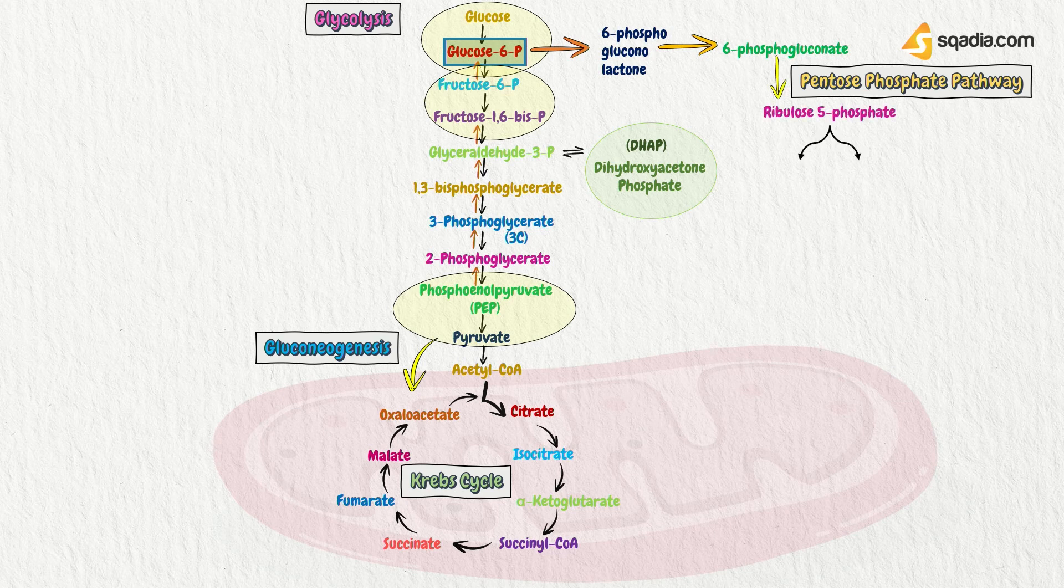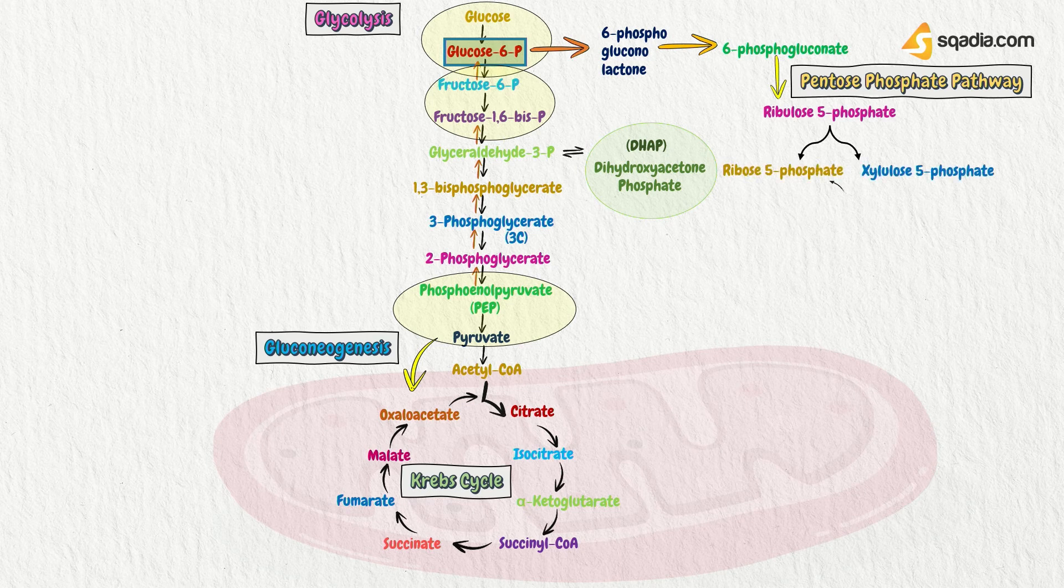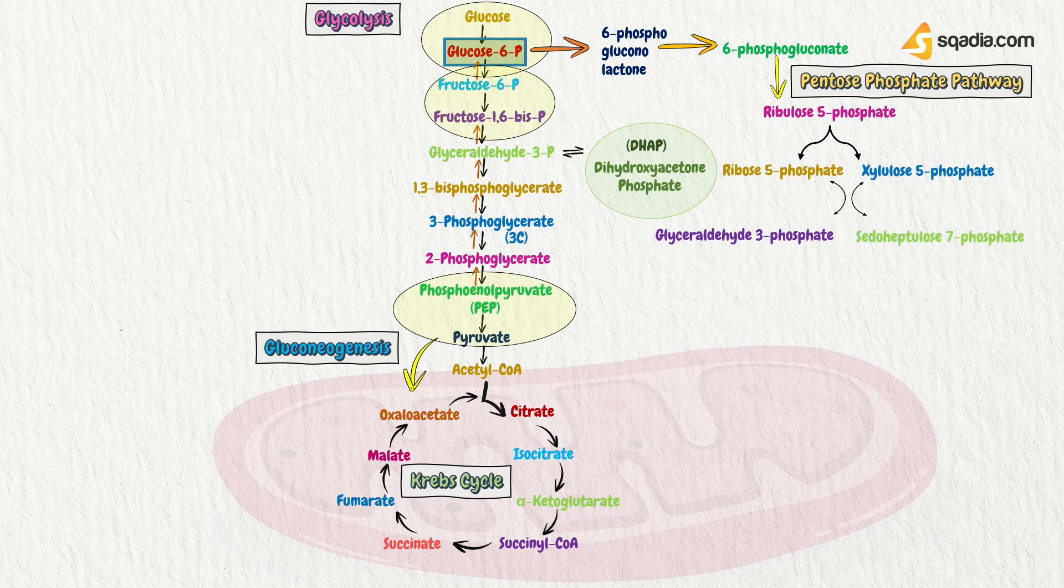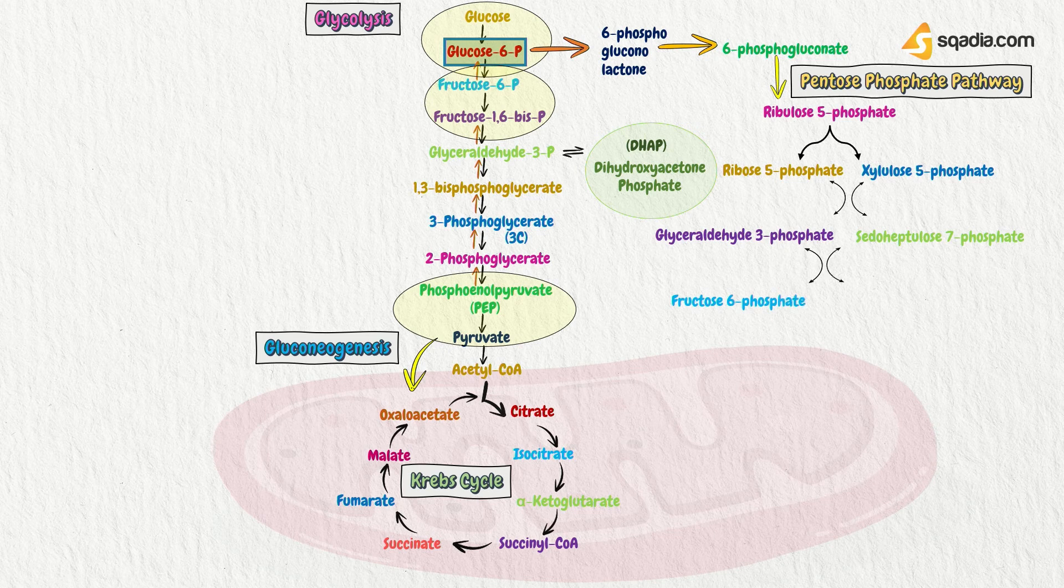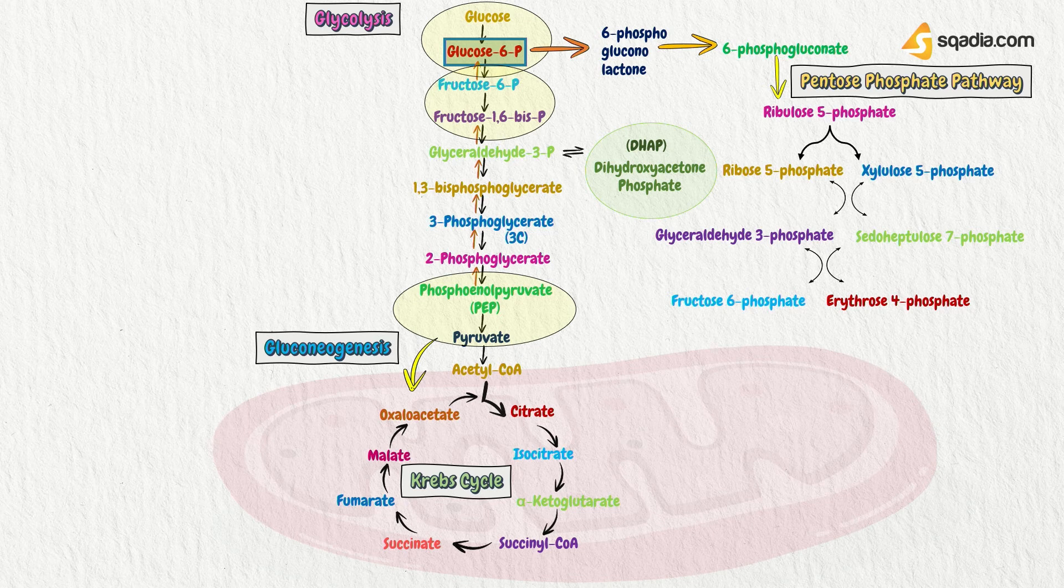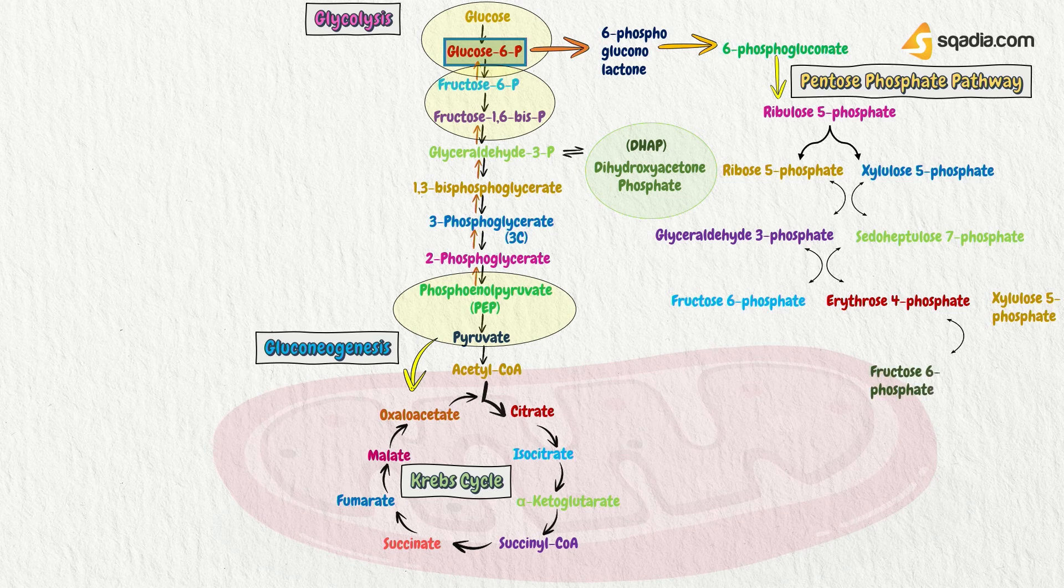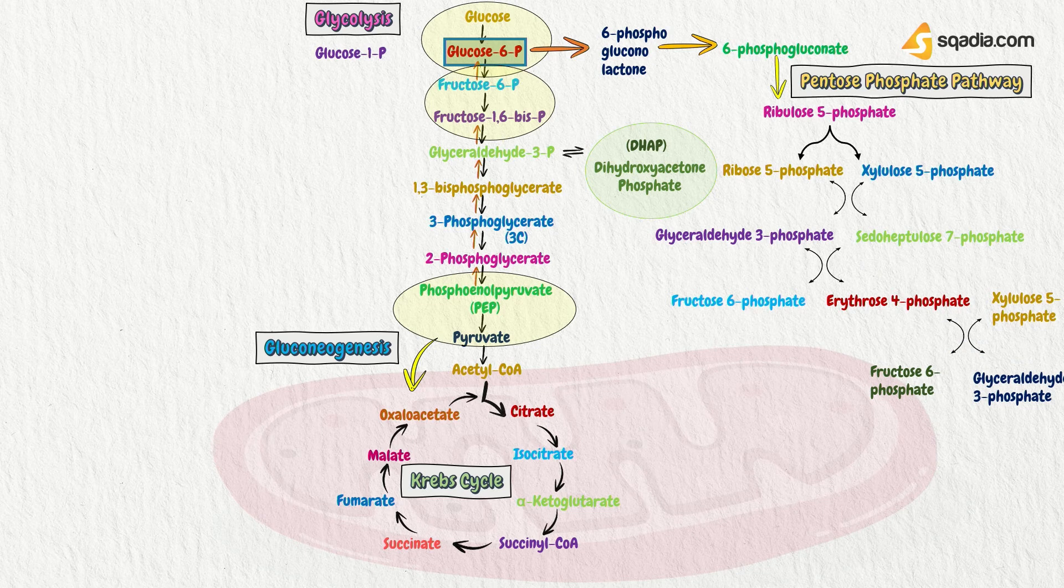From that, series of reactions take place from ribulose 5-phosphate. That ultimately lead to the production of glyceraldehyde 3-phosphate and sedoheptulose 7-phosphate. Now, both of these enzymes undergo changes and become fructose 6-phosphate and erythrose 4-phosphate. And from that, with the action of xylulose 5-phosphate, fructose 6-phosphate and glyceraldehyde 3-phosphate has been made. And both of them aid in glycolysis.